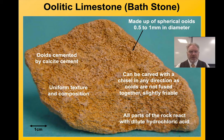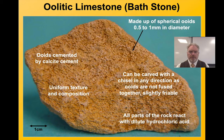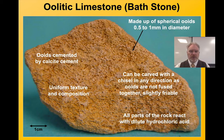Ooids are formed by precipitation of calcite around some kind of nucleus, which then gets washed around in the waves in a warm, shallow sea. It's a very distinctive type of limestone — it will, of course, fizz with acid — but it's those spherical balls formed by the accumulation of calcite through precipitation that make it distinctive.